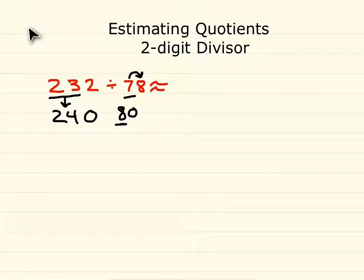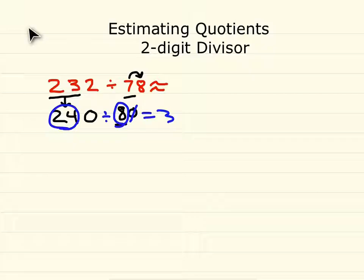So here we have 24 divided by 8, and that equals 3. Let's cross off our zeros in our divisor first, just like the division patterns video. And since we cross off one zero in our divisor, we're allowed to cross off one zero in our dividend. Therefore, there are no zeros left to put on the end of your quotient, so your answer for 240 divided by 80 is 3.